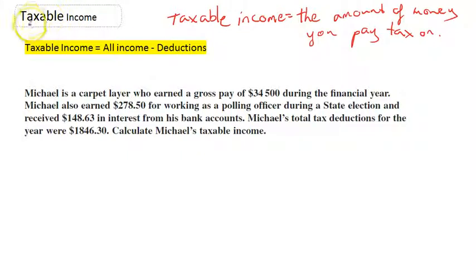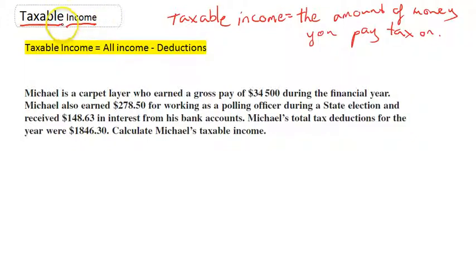We're continuing with taxation here. This time we're looking at taxable income. We're not calculating the amount of tax someone has to pay yet. What we're doing is figuring out how much income somebody makes in a year, and then once we know how much income they make, the government can figure out how much tax they should pay. So here's our formula for taxable income: taxable income is equal to all of the income someone earns minus the deductions that they earn.